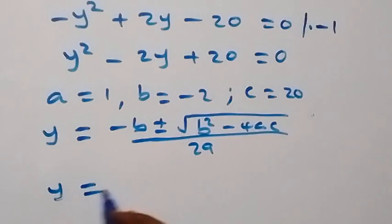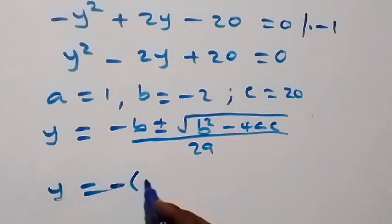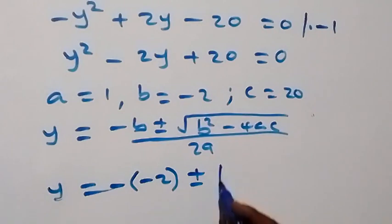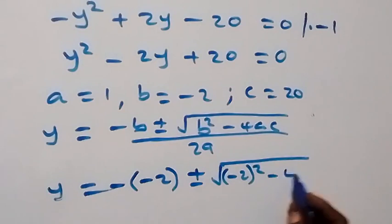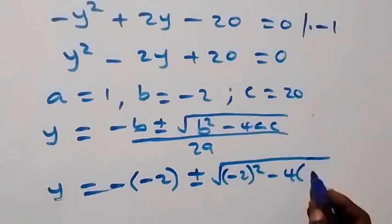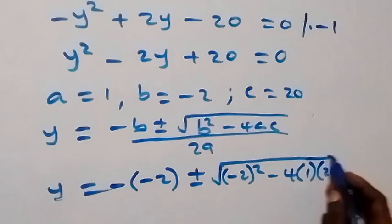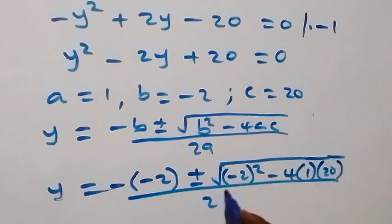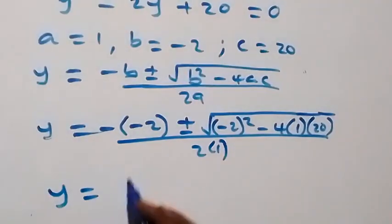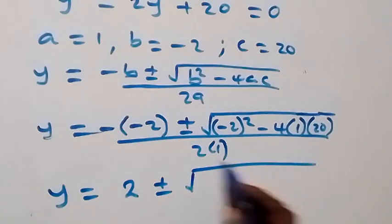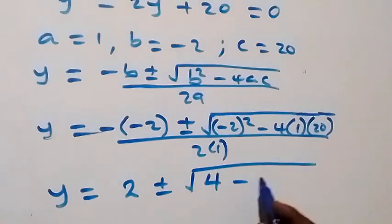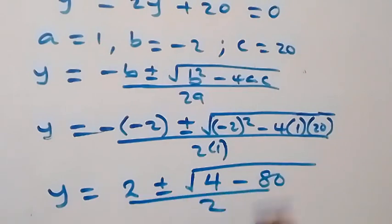Substituting, with b equals to minus 2, we have y equals to minus (minus 2) plus or minus square root of (minus 2) squared minus 4 times 1 times 20, divided by 2 times 1. That gives y equals to 2 plus or minus square root of 4 minus 80, over 2.